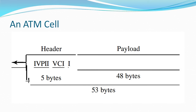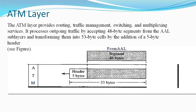We shall now discuss the different ATM layers. The ATM layer provides routing, traffic management, switching, and multiplexing services. It processes outgoing traffic by accepting 48-byte segments from the AAL sublayer and transforming them into 53-byte cells by adding a 5-byte header. The layer diagram is as shown in the figure.